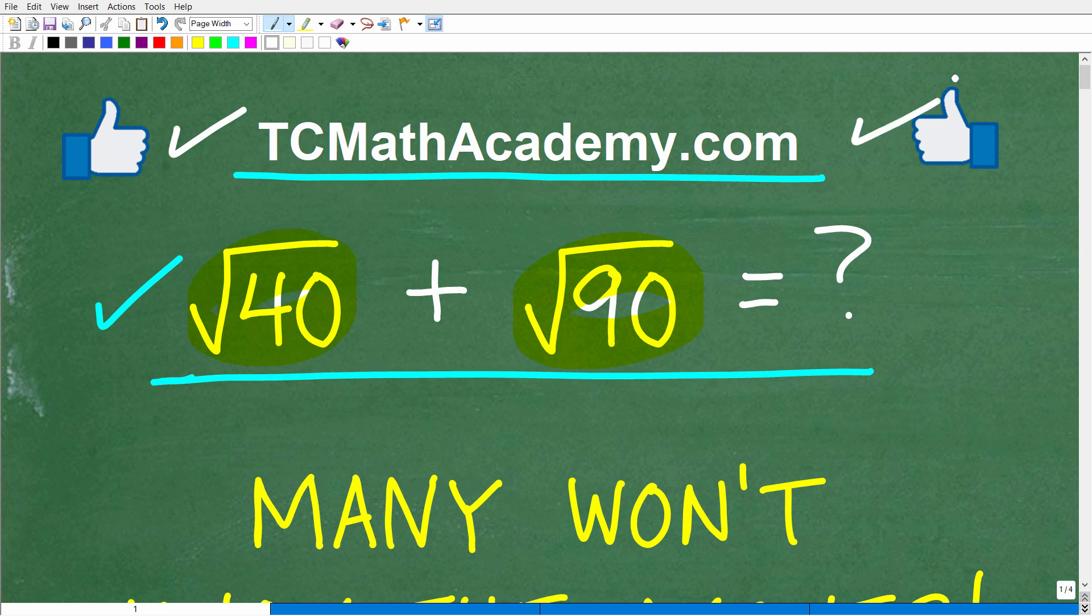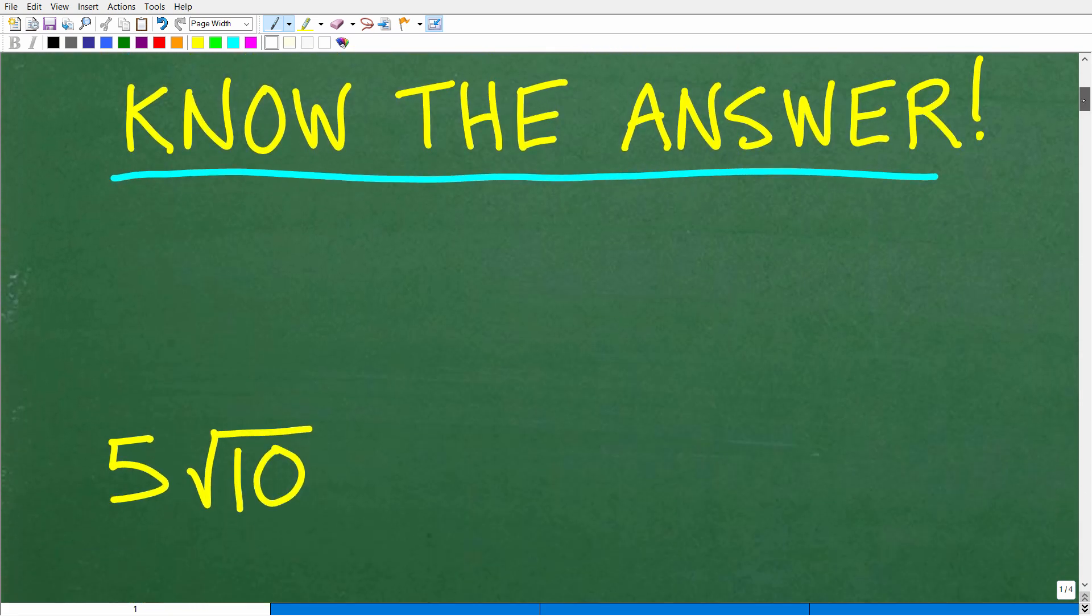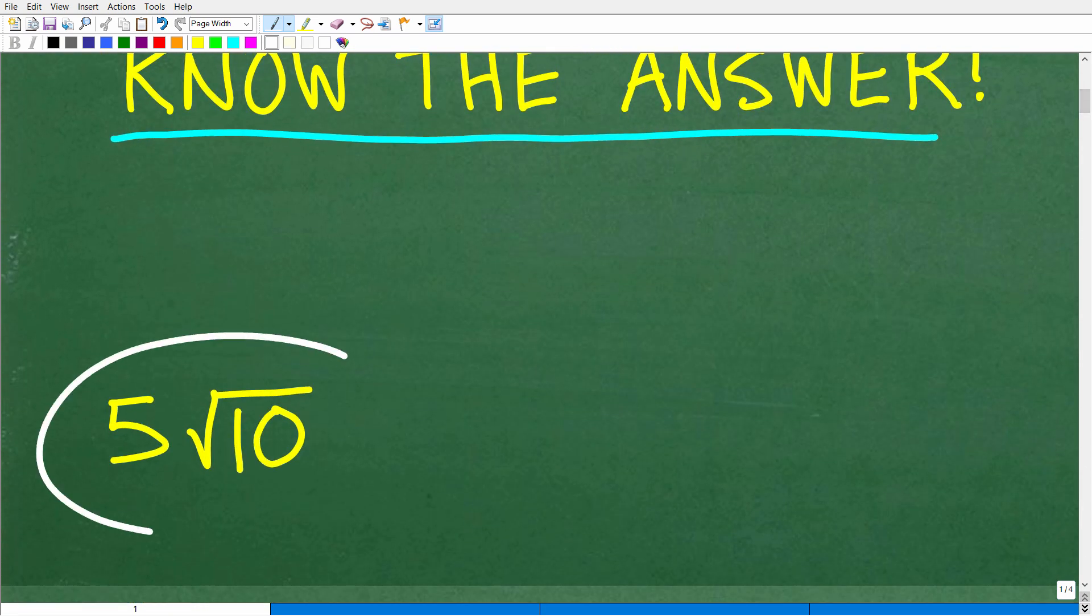I'm going to show you the answer, but before I do, I want to say that I'm going to be making a special announcement during this video, so you're going to want to stick around. But anyways, let's go ahead and see what the answer is. Square root of 40 plus the square root of 90. The correct answer is 5 square root of 10.